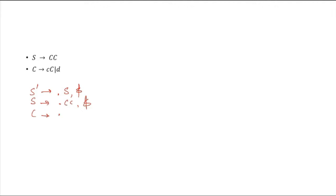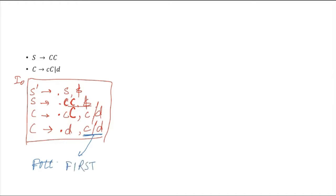So the rules for capital C: dot small c capital C — the lookahead will be first of capital C comma the existing lookahead dollar. First of capital C gives us small c and d. So small c and d are the lookaheads for this production. Another production rule headed by C: dot d — lookahead will be c or d, coming from first of capital C comma the lookahead dollar, which is nothing but small c and d.